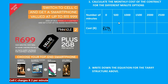If they use 500 minutes of airtime, they will still pay R699, because they are still within the free minutes — they have not exceeded the 1000 free minutes. Similarly, if they use exactly 1000 minutes, that is also free, so they still only pay R699 for the contract.